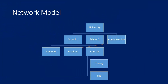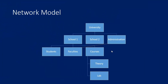The network model is similar to the hierarchical model, but whereas the hierarchical model is a tree, the network model is a graph — meaning siblings may be connected or there may be a cycle. For example, some faculties are associated with an administrative department, and that administration department also has access to faculty data, forming a cycle. When such a situation exists, we call it a network model.